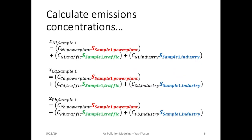The receptor model equation can be expanded to form three equations. For the first one, the sample concentration of nickel for sample one equals the fraction of nickel from the power plant multiplied by the emission concentration of the power plant, plus the fraction of nickel from the traffic multiplied by the emission concentration from the traffic, plus the fraction of nickel from the industry multiplied by the emission concentration from the industry. The same logic applies for the other two elements.